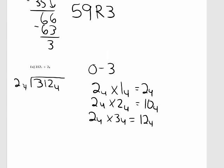Let's go through these. 2 times 1 is 2. 2 times 2 is 4 — 4 divided by 4 is 1 with a remainder of 0. And 2 times 3 is 6 — 6 divided by 4 is 1 with a remainder of 2. Now that we've listed all these multiples out, let's do the division.